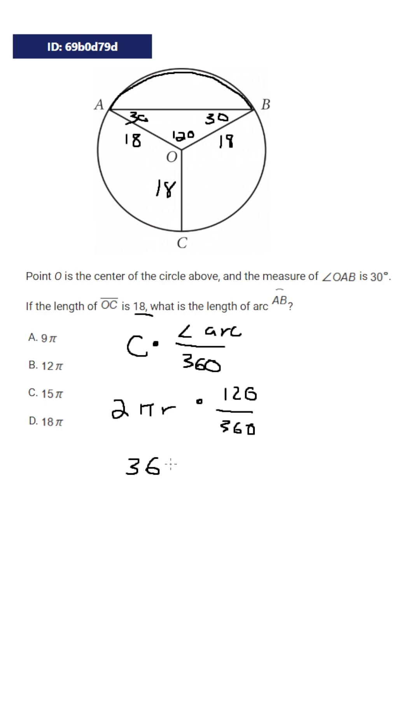Well our radius is 18 so we're going to have 36 pi times 120 over 360 is 1 third, so we're just going to have it be 12 pi and our answer is going to be B.